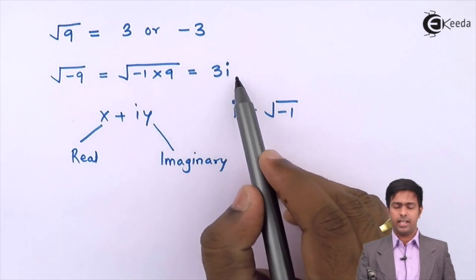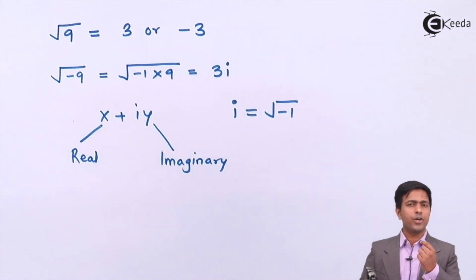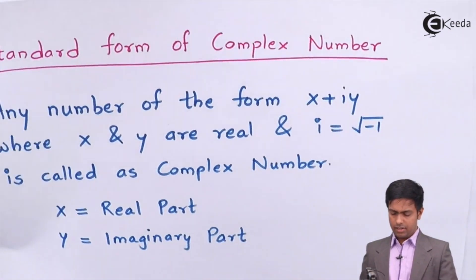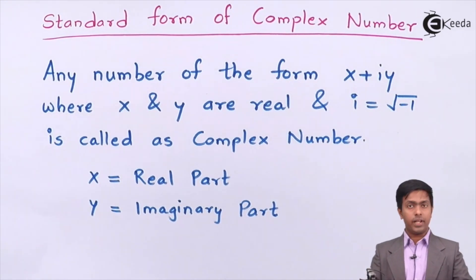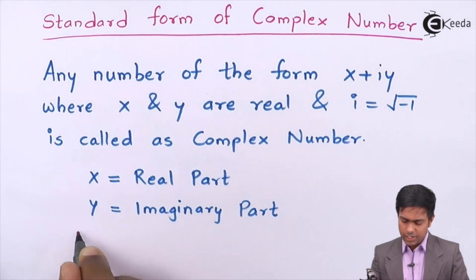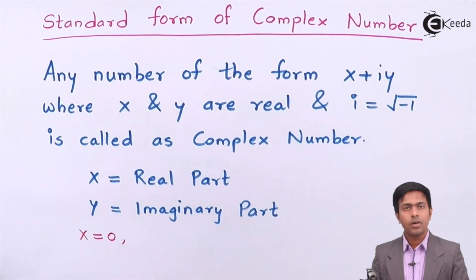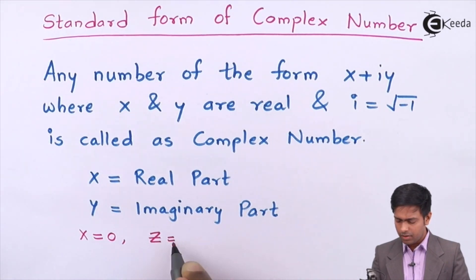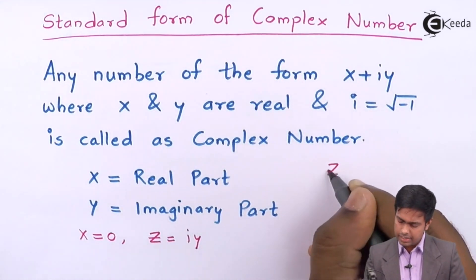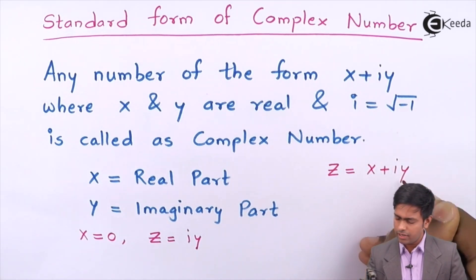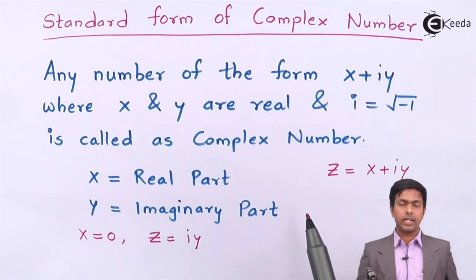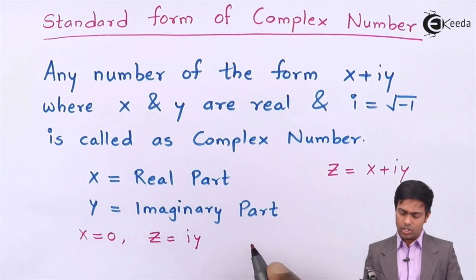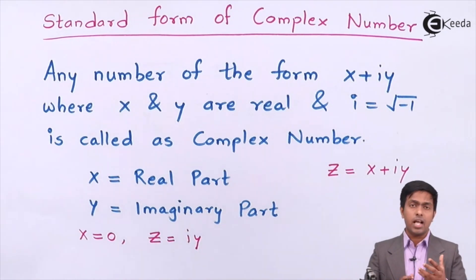In our example we got 3i, which has an imaginary part but no real part. Whenever in a complex number the x part is 0, the complex number z becomes just iy — the imaginary part only. Such a number is called a purely imaginary number.